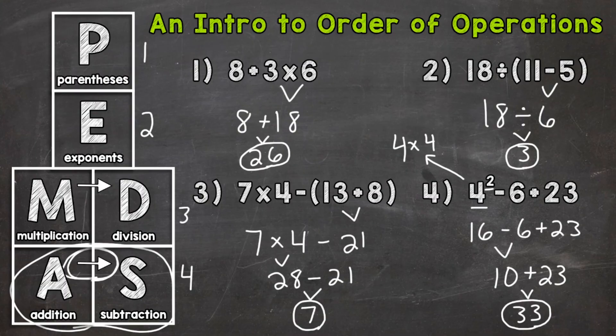That left-to-right rule can happen with multiplication and division as well. If you have multiplication and division in the same problem, you need to go left to right because they are both level or priority number three.